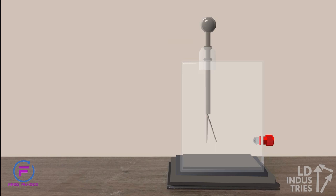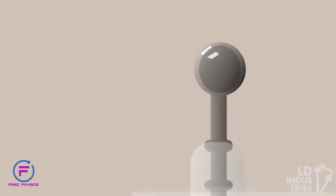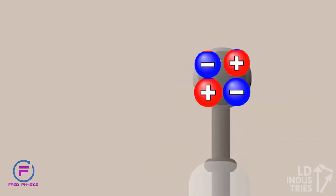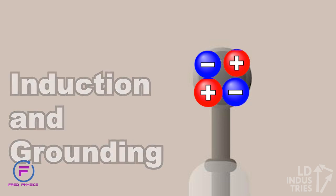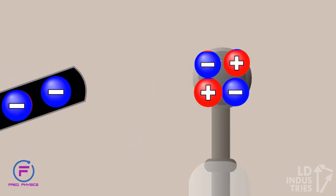In a final experiment, we can also cause the neutral electroscope to gain a charge without ever touching it to the rod. This process is called induction and grounding. Here we bring a charged rod, in this case it's negative, close to the neutral electroscope.